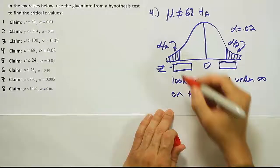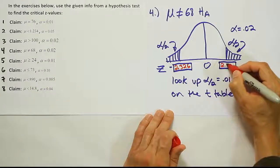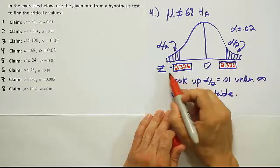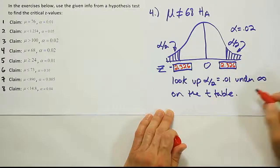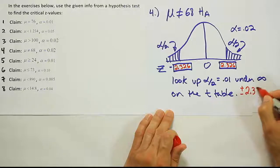We find the answer 2.326 and 2.326. So negative 2.326 and positive 2.326. Our answer is plus or minus 2.326.